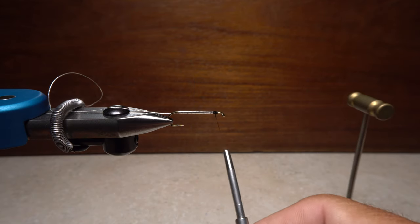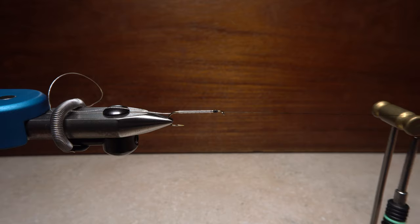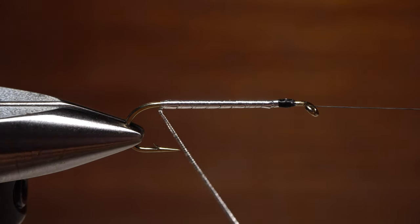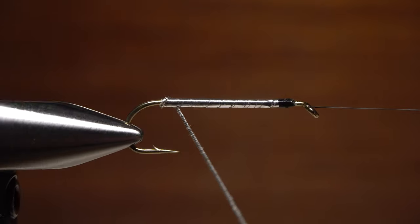If you need to, swing your bobbin cradle back into position and once again use it to hold your tying thread. This will allow you to pick up the oval tinsel, hold it at about a 45-degree angle to the hook shank, and simply rotate the vise.